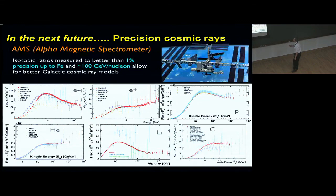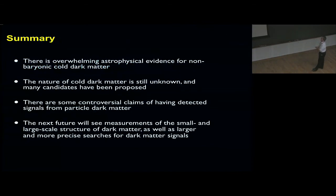The data will have 1% precision up to iron and 100 GeV per nucleon. My opinion here is that the AMS data will serve to pinpoint the model of cosmic ray propagation in the galaxy, cosmic ray propagation and production in the galaxy. That should be the first step before any excess is claimed over what we understand, because we don't understand what we think we understand. So, summary: there is overwhelming astrophysical evidence for non-baryonic cold dark matter. The nature of cold dark matter is still unknown. There are too many candidates that have been proposed. There are some controversial claims of detection, and we will see more measurements in the future. Thank you.